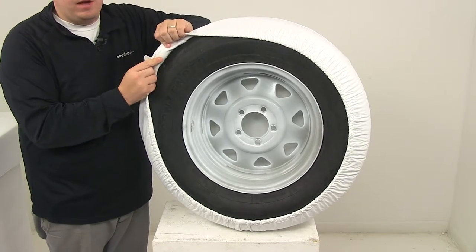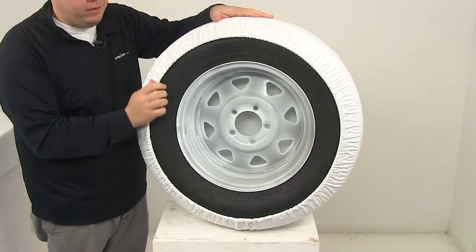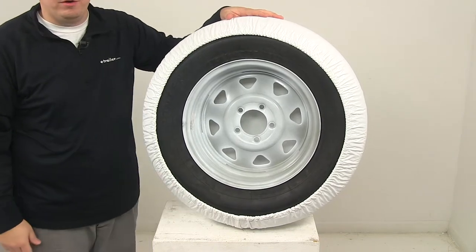On the inside is a soft, non-scratch lining, and on the bottom is a slit for water drainage.